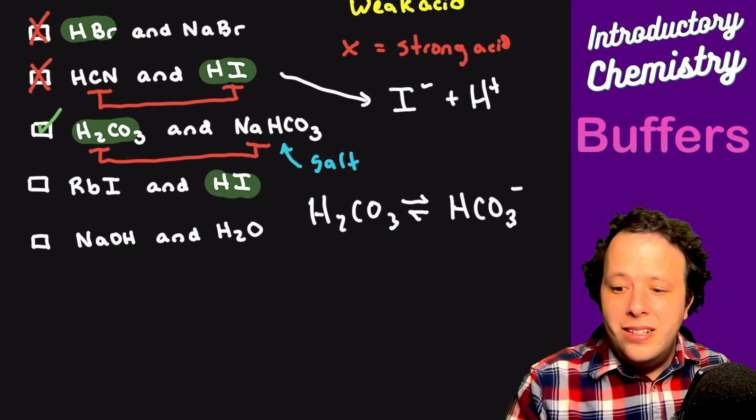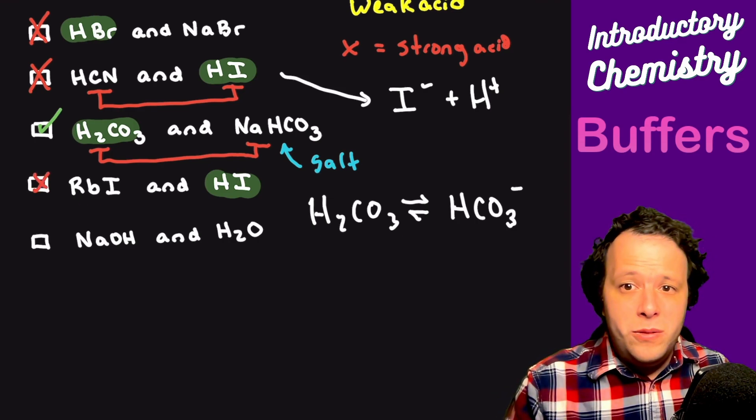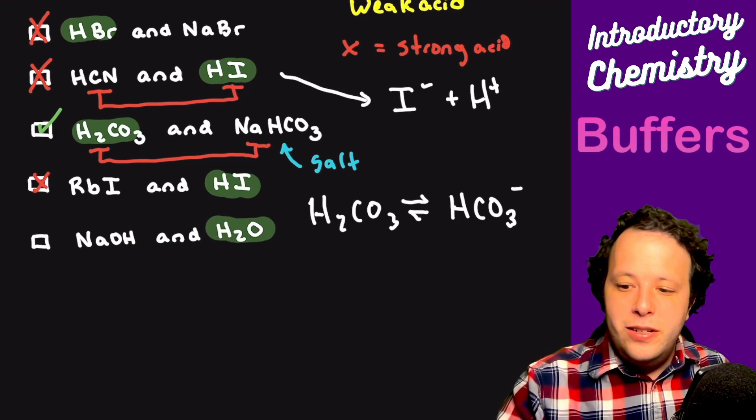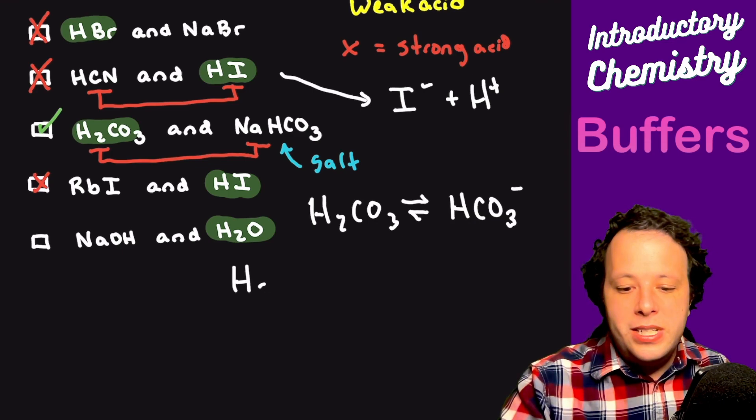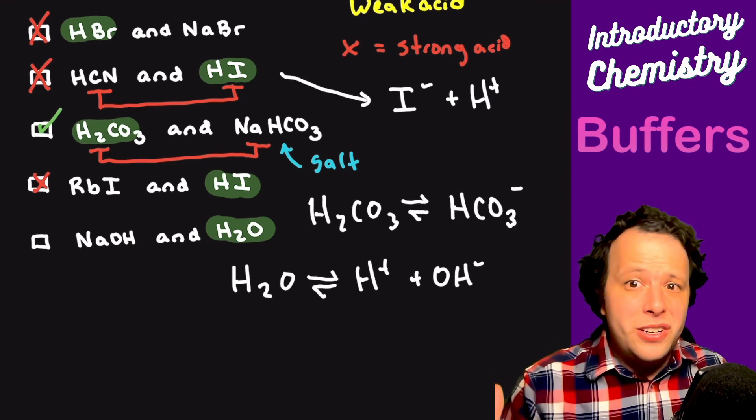This HI, that's a strong acid. So that's a no. And the last one is sodium hydroxide and water. Water is considered to be the acid here. Would this be considered to dissociate the right way? If I take H2O, it would make H+ and OH-. OH- and sodium are together. But once again, sodium hydroxide, what is that? That's a strong base.